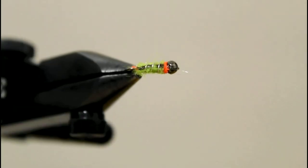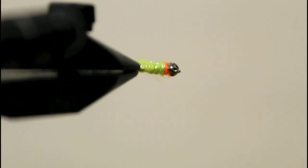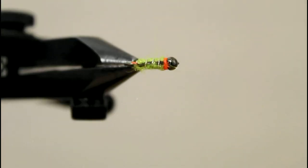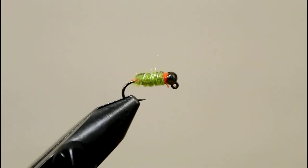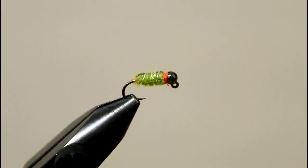So that's the rock crawler caddis—super quick fly to tie, doesn't really feel bad if you hang it up in a tree or some rocks. Again, super effective euro nymphing pattern. There's tons of variations you can do with it. Great overall fly. Thanks.